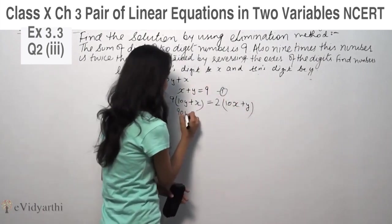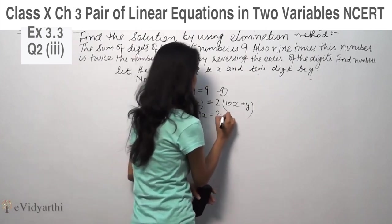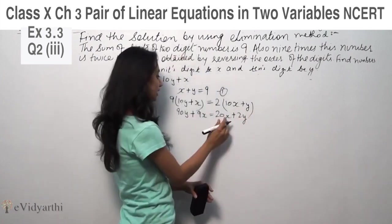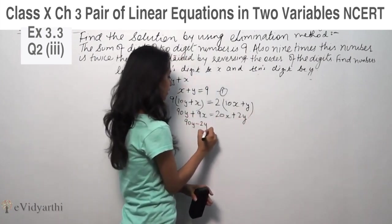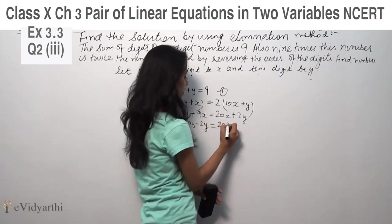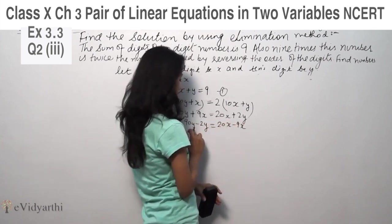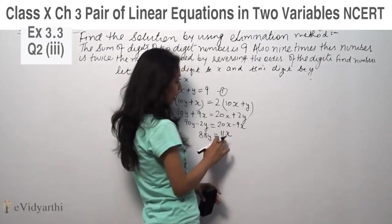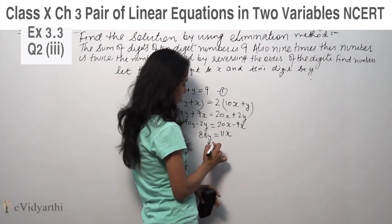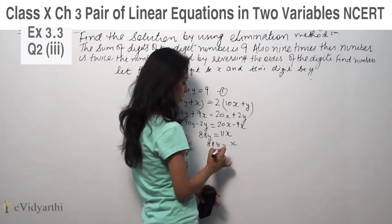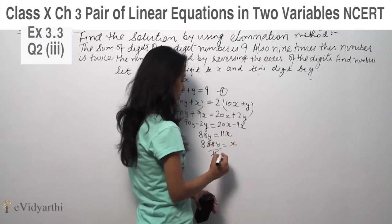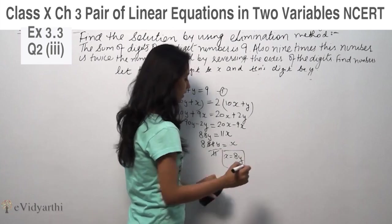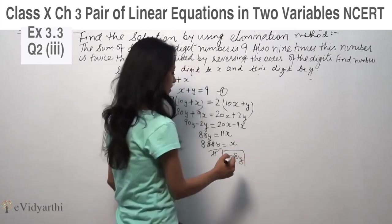So multiply, 90y plus 9x is equal to 20x plus 2y. So 90y minus 2y is 20x minus 9x. So 90 minus 2 is 88y equals 11x. So 88y over 11 is equal to x. So x is equal to 8y. This is our x value.